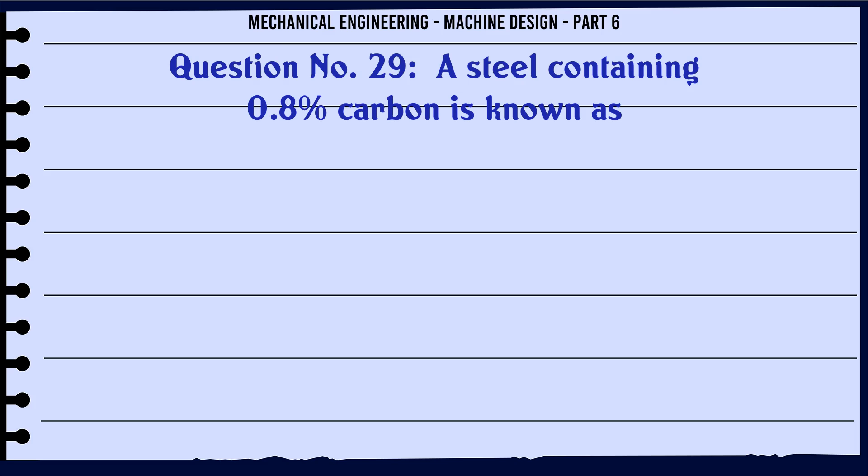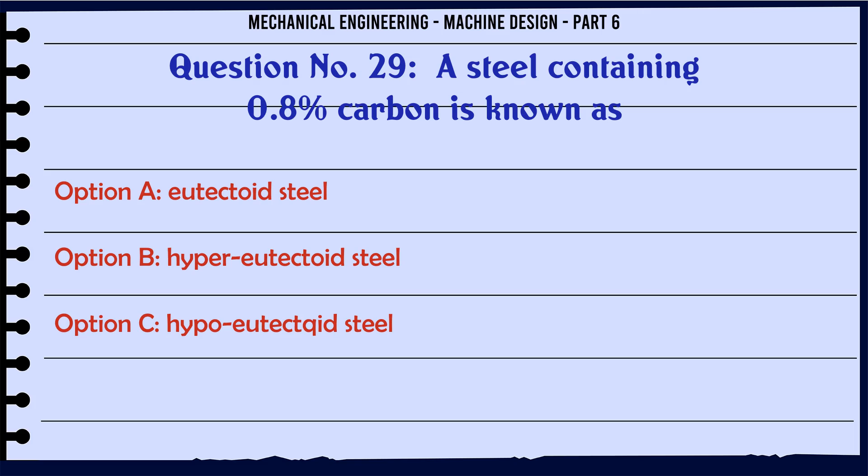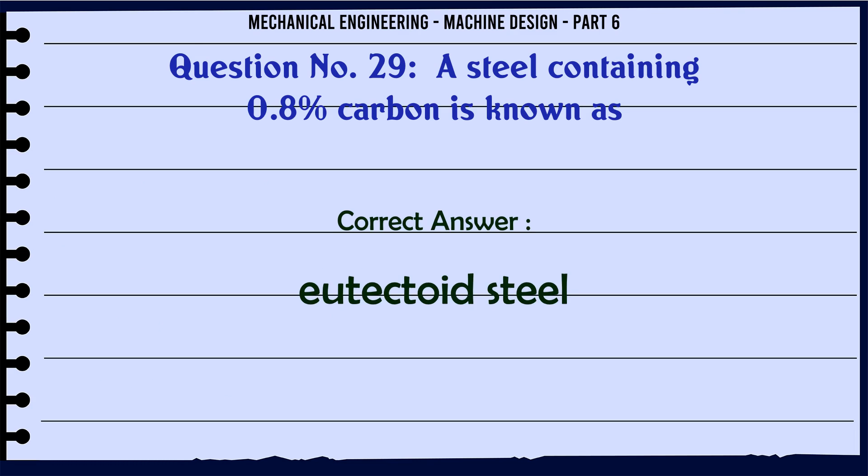A steel containing 0.8% carbon is known as: A) eutectoid steel, B) hyper eutectoid steel, C) hypo eutectoid steel, D) none of these. The correct answer is eutectoid steel.